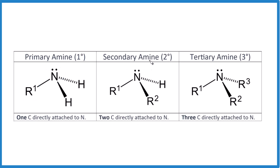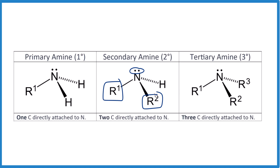For the secondary amine, again the lone pair is pushing things down. But now we have one carbon or a group of carbons attached here, and then another carbon or group of carbons attached. We only have one hydrogen atom here by itself. That's a secondary amine.